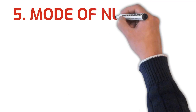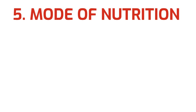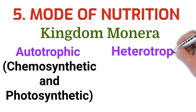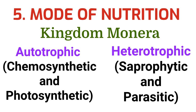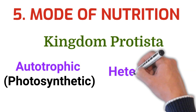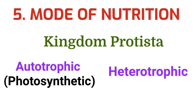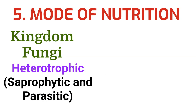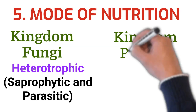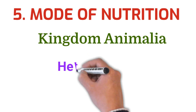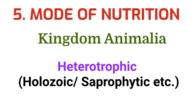The last characteristic is the mode of nutrition. Mode of nutrition in Kingdom Monera is autotrophic — that is chemosynthetic and photosynthetic — and heterotrophic — that is saprophytic and parasitic. In Kingdom Protista it is autotrophic (photosynthetic) and heterotrophic. In Kingdom Fungi it is heterotrophic, that is saprophytic and parasitic. Kingdom Plantae is autotrophic (photosynthetic). Kingdom Animalia is heterotrophic, that is holozoic or saprophytic, etc. This was all about the characteristic features of five kingdoms.